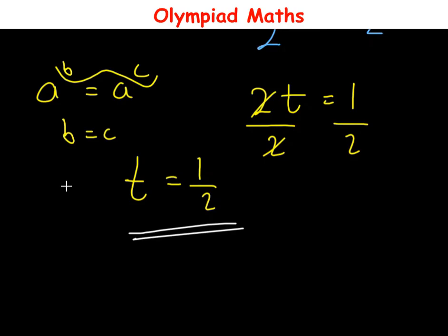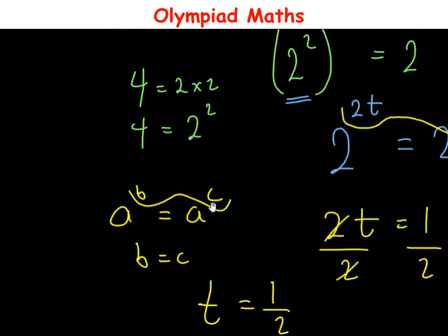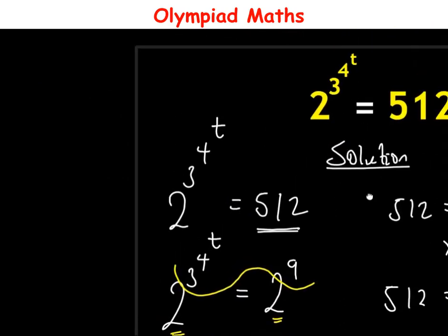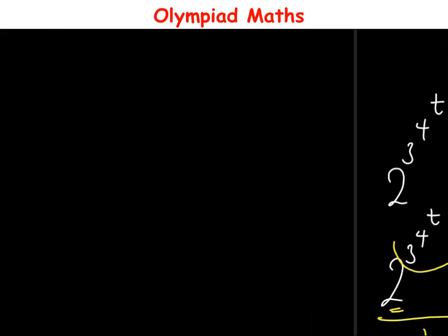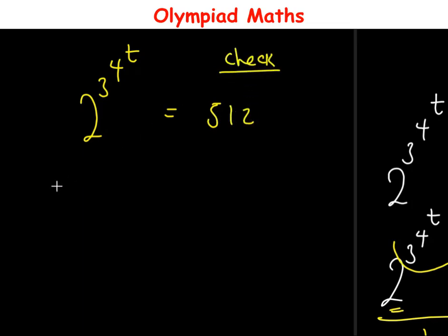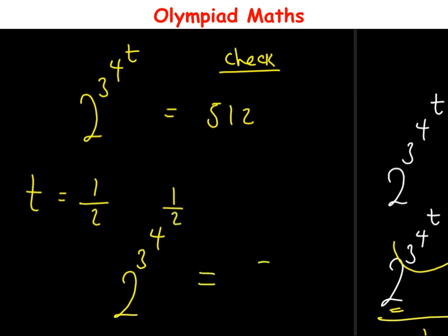We have gotten t equals 1 over 2, but let us verify whether this is the correct solution. Back to the question: 2 raised to power 3 raised to power 4 raised to power t is equal to 512. Substituting t equals 1 over 2, this becomes 2 raised to power 3 raised to power 4 raised to power 1 over 2. Does this equal 512?